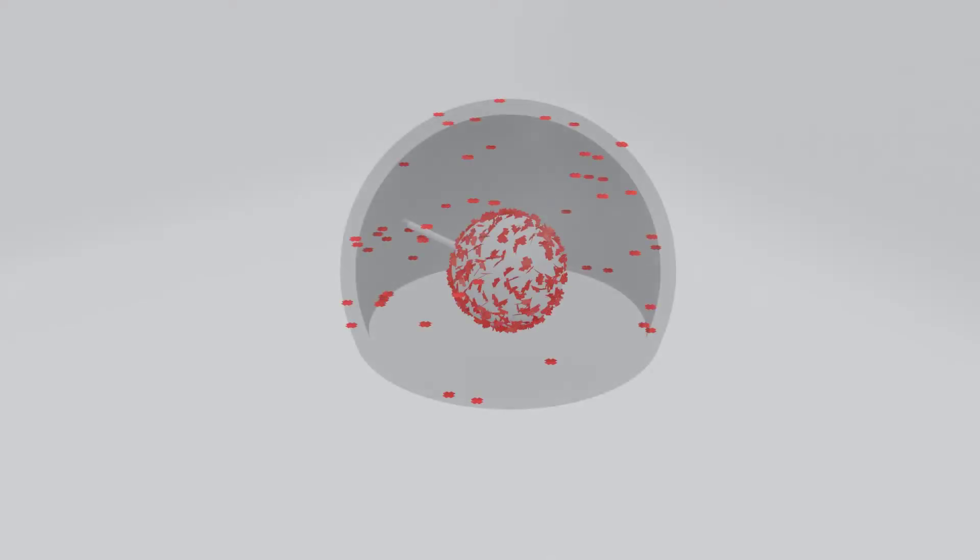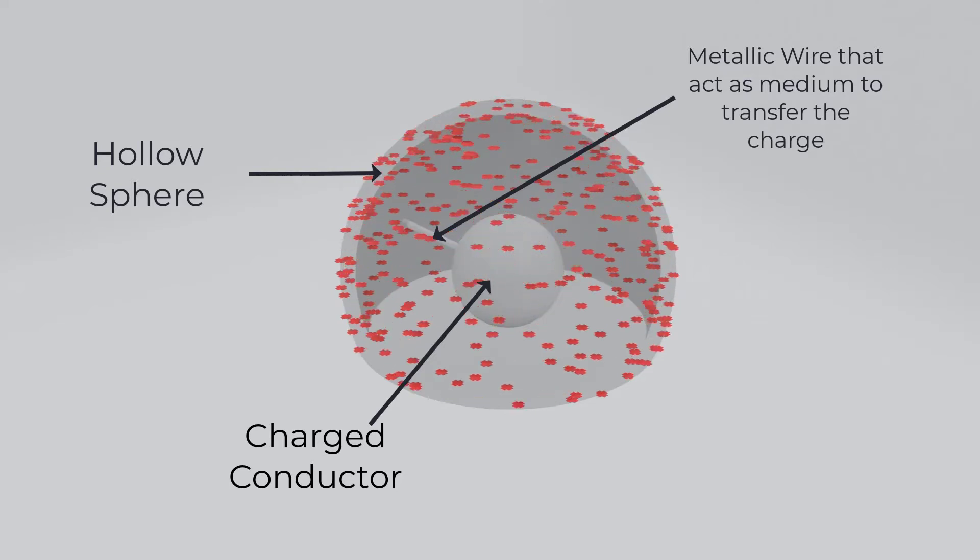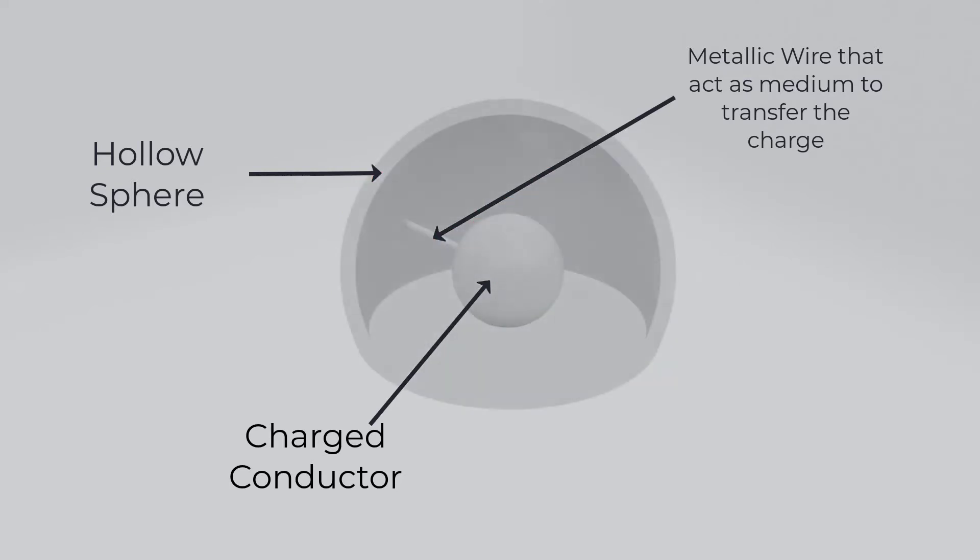Principle of Van de Graaff Generator: If a charged conductor is placed inside a hollow conductor and is connected by some medium, then all the charge present inside the hollow conductor is transferred to the hollow conductor.